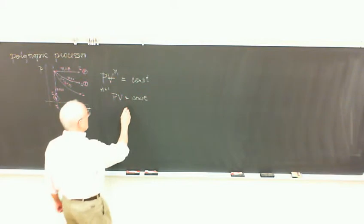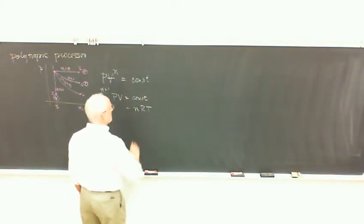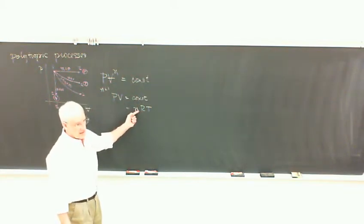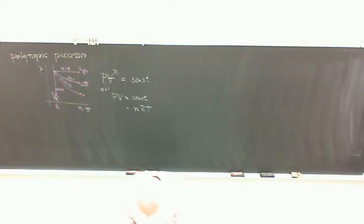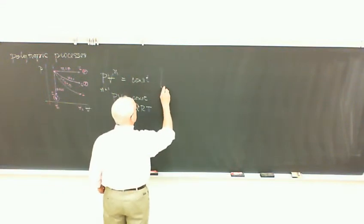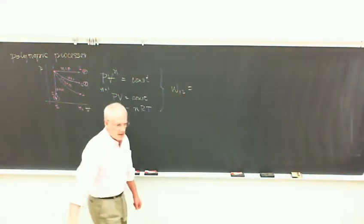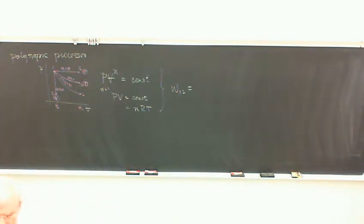If the right-hand side is a constant, and those are both constants, then T must be a constant as well. That's all we needed on that problem. And for both of these, you had to find the boundary work. Remember how to do that? Remember how to find the boundary work.